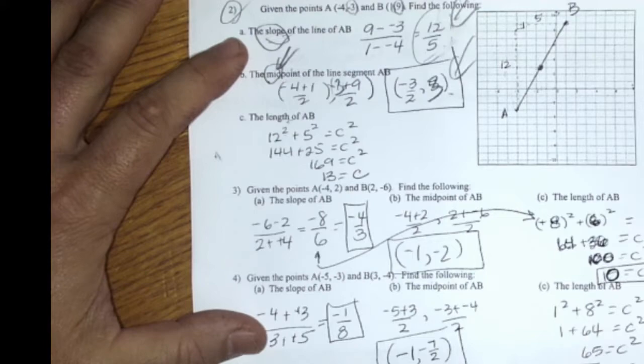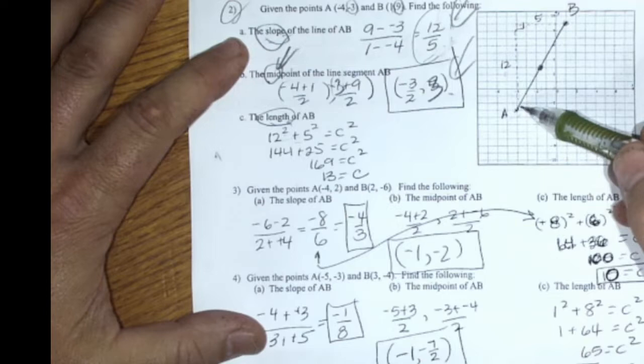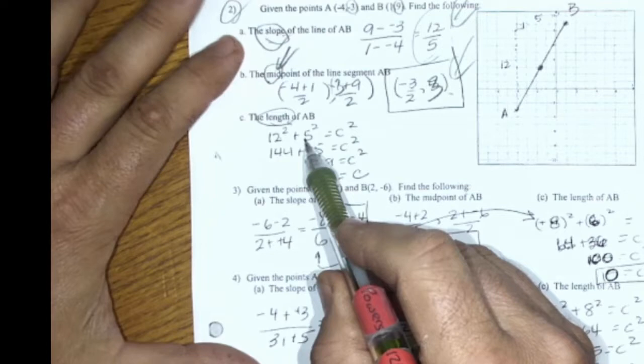And then Pythagorean's Theorem defines the length. The length is how far it is from here to here. And that's like a tape measure going on there. How many units is it over? It's 13 units. 12 squared plus 5 squared.